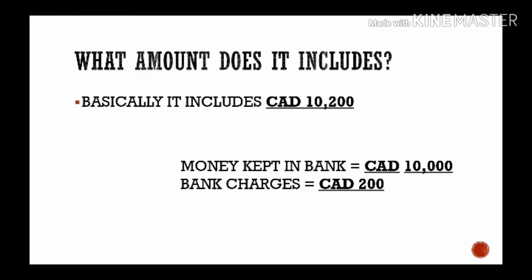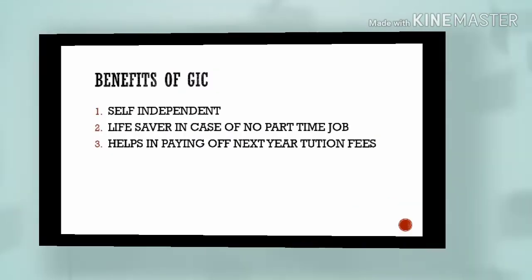How much money does the GIC include? It includes ten thousand and two hundred dollars in total. Ten thousand dollars are kept in the bank account of the person who has opted for the GIC, and two hundred dollars are the service or banking charges that are charged by the bank for the services it provides to the students.